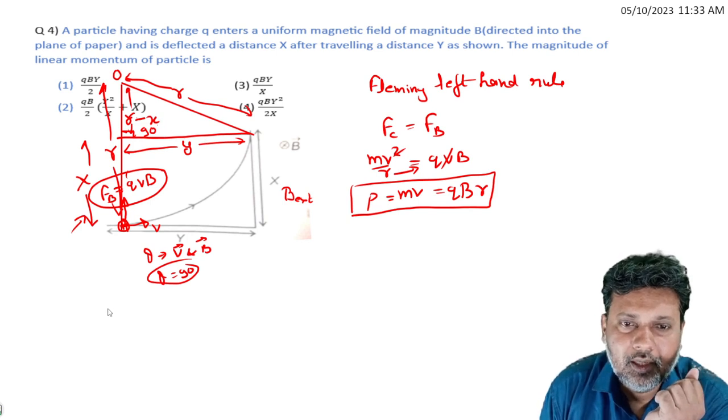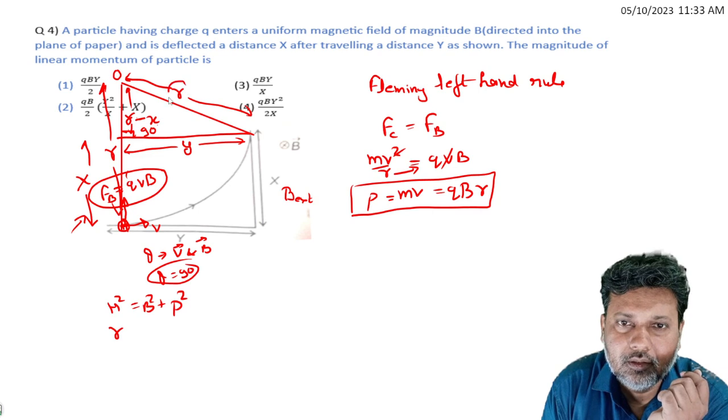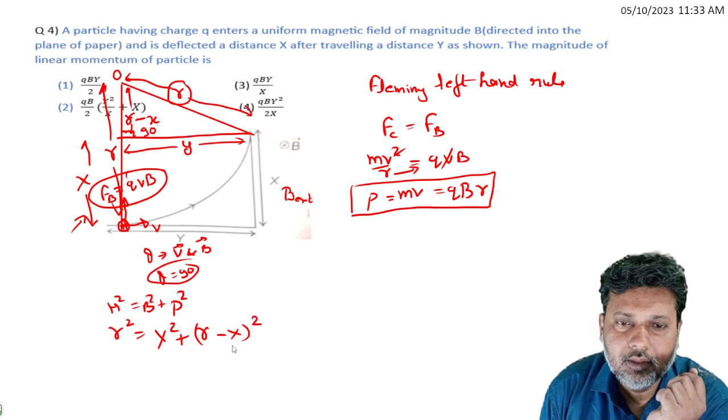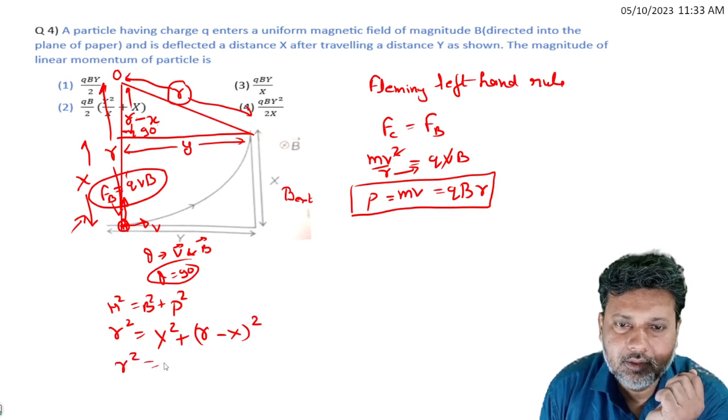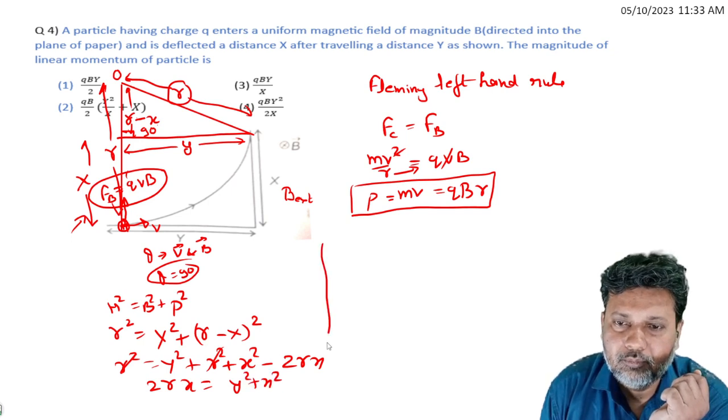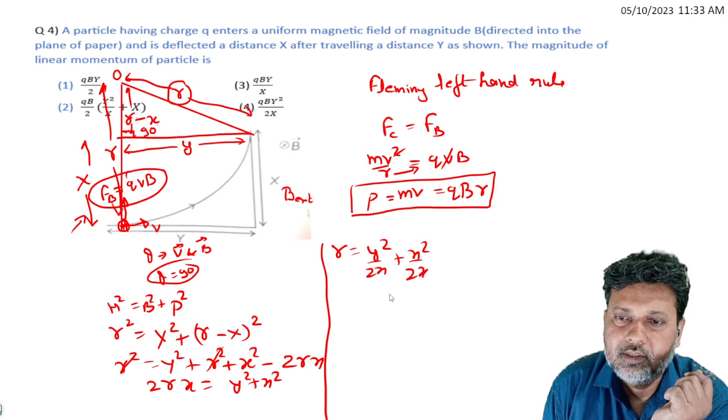Using Pythagoras theorem: hypotenuse squared equals base squared plus perpendicular squared. So r² equals y² plus (r minus x)². Expanding: r² equals y² plus r² plus x² minus 2rx. The r² terms cancel, giving 2rx equals y² plus x². Therefore r equals y² by 2x plus x by 2.